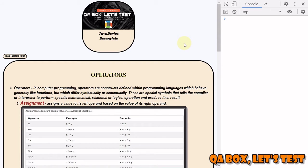These are special symbols that tell the compiler or interpreter to perform specific operations like mathematical, relational, logical, and eventually produce the final result. We have already seen one of the operators which was equal to in the previous video.